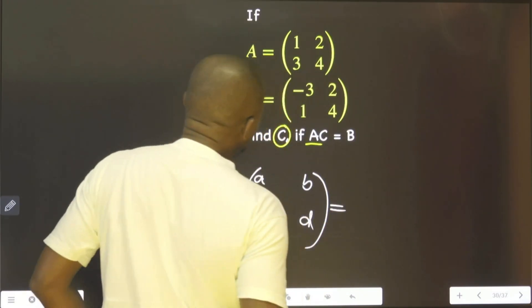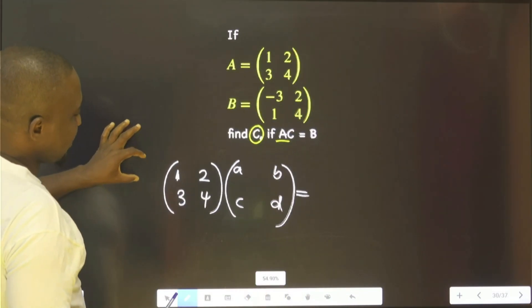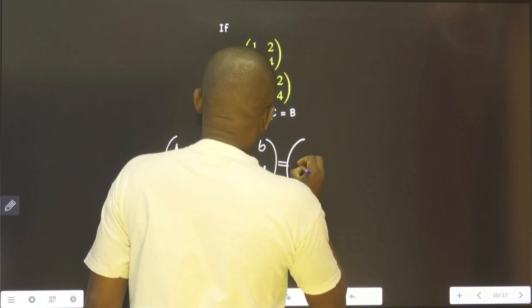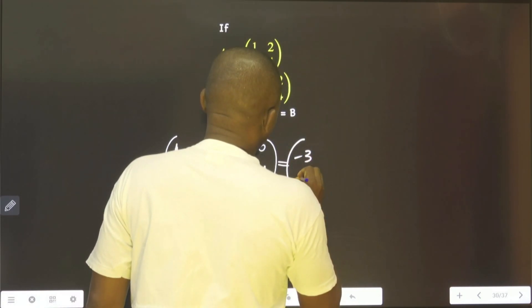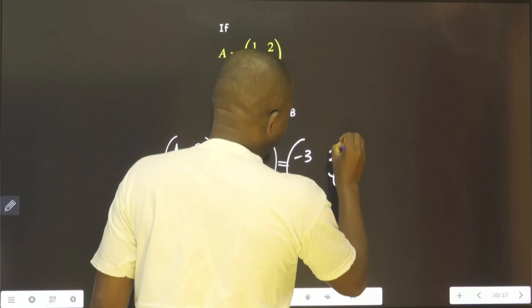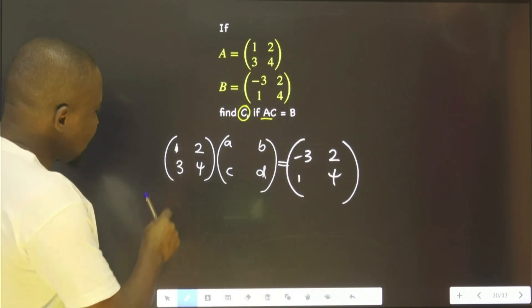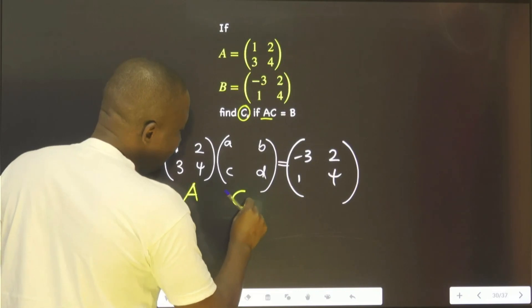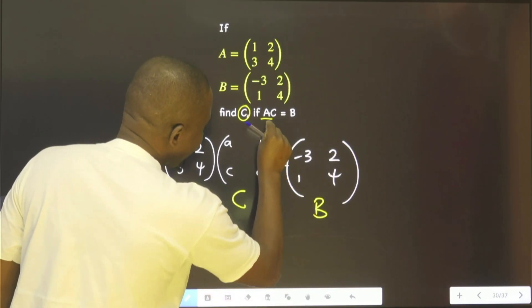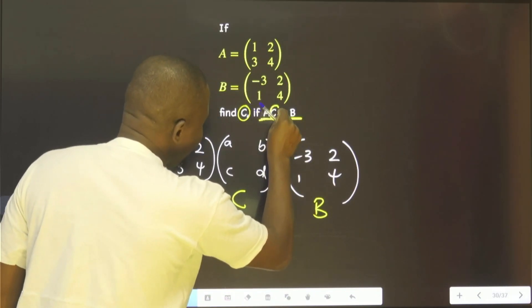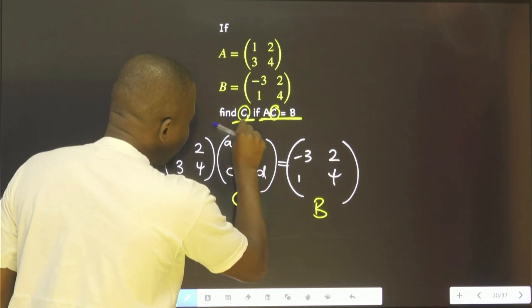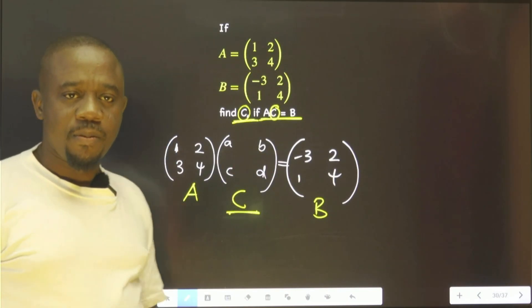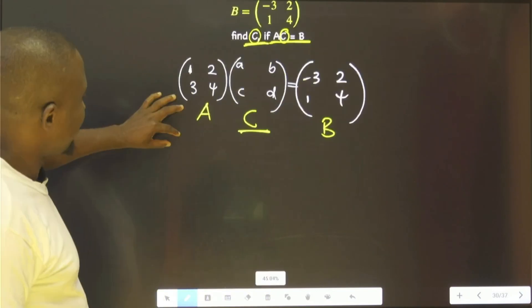It's equal to B — that is, minus 3, 1, 2, and 4. So this is our A, this is our C, this is our B, following this equation. So we are looking for C according to this question. Let's do that.